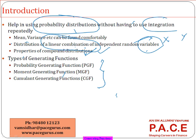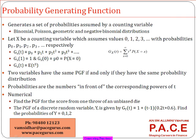For most standard distributions, the actuarial tables provide both the probability generating function and the moment generating function. However, for a non-traditional distribution, the exam may ask you to find the moment generating function or the probability generating function directly. The probability generating function is appropriate only for discrete distributions, as it generates the set of probabilities for a particular variable.